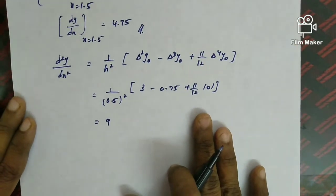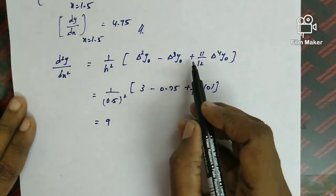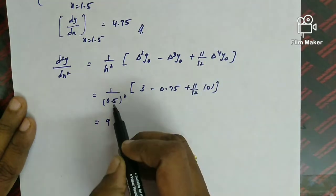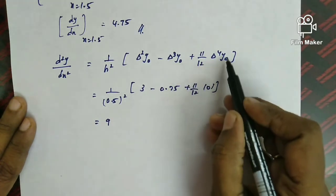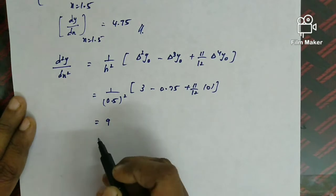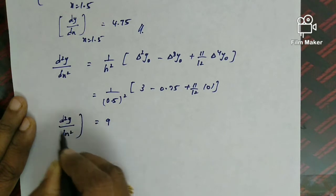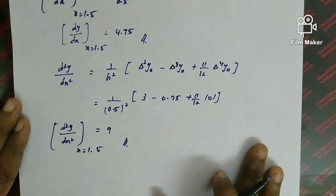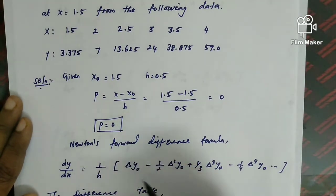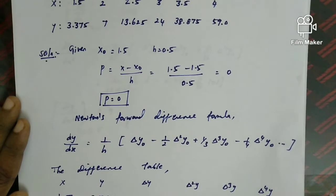For the second derivative, we apply the corresponding Newton's forward difference formula for d²y/dx². Substituting the difference table values gives d²y/dx² at x = 1.5 equal to 9. So dy/dx = 4.75 and d²y/dx² = 9 at x = 1.5.